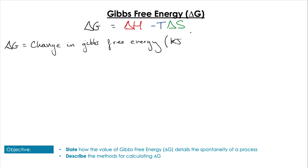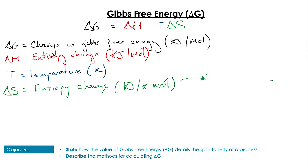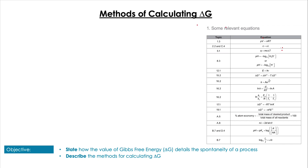We can calculate Gibbs free energy using a simple equation given in the data booklet: ΔG equals ΔH minus T times ΔS, where T is temperature. One important thing to bear in mind is that the entropy change ΔS is quoted in joules per kelvin per mole rather than kilojoules, so we have to divide that value by 1000 to get it into kilojoules when we process the values.